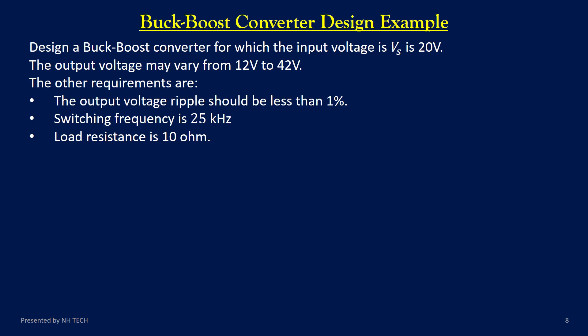The duty ratio directly controls whether the output voltage steps up or steps down. The inductor determines the ripple current and the capacitor helps to control the output voltage ripple. In this design example, we are designing a converter with an input voltage of 20 volts. The output voltage is required to be variable, ranging from 12 volts up to 42 volts.